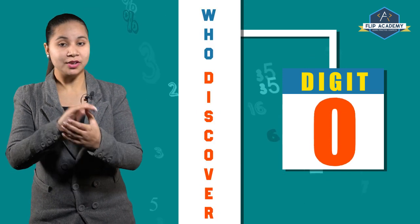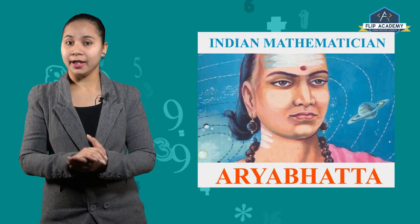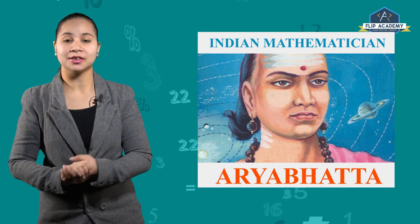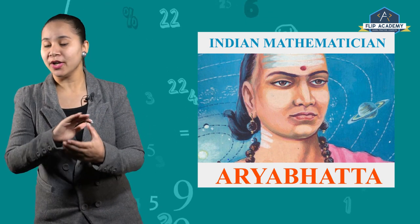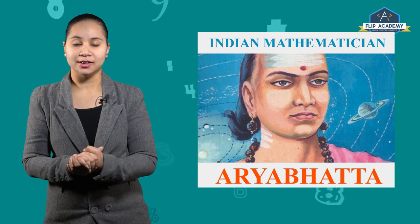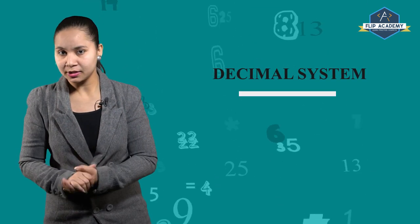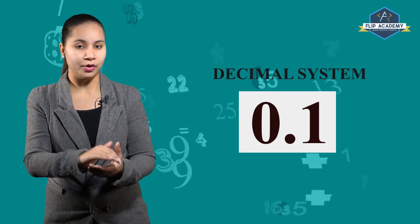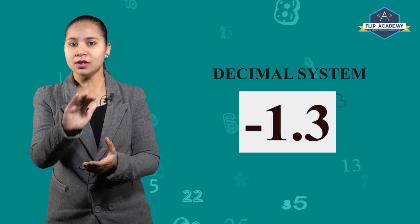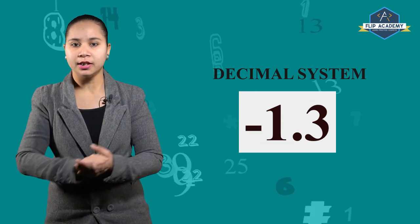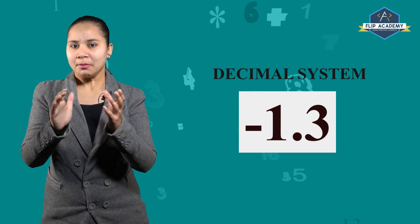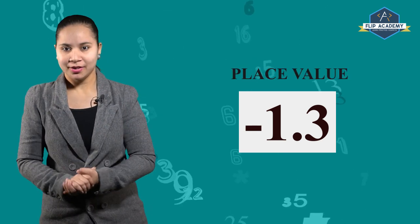Do you know who discovered 0? Zero was discovered by an Indian mathematician. With the existence of 0, we came to know about the decimal system, like 0.1, 0.2, 1.3, minus 1.3 — meaning non-integral forms. And we also came to know about place value.